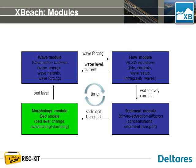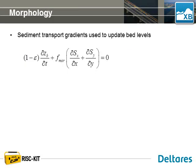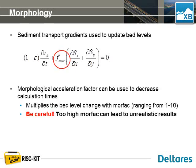Finally, we'll move to the fourth module: the morphology module. Here we compute bed-level change by solving the Exner equation, where the change in bed level over time (dZb/dt) is defined as a function of the spatial gradients in sediment transport. In XBeach, we can apply a morphological acceleration factor (f_mor) to decrease calculation times by accelerating bed-level change relative to transport gradients. Typically the morphological acceleration factor ranges from 1 (no acceleration) to 10 (ten times acceleration).